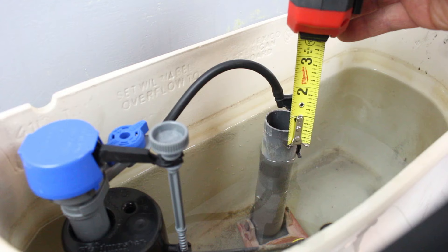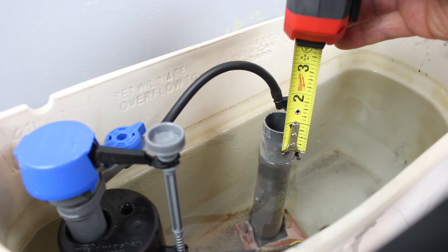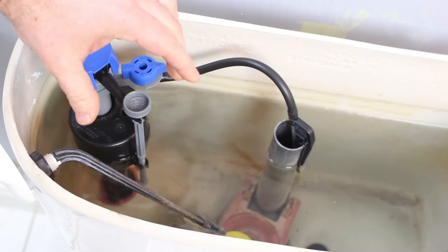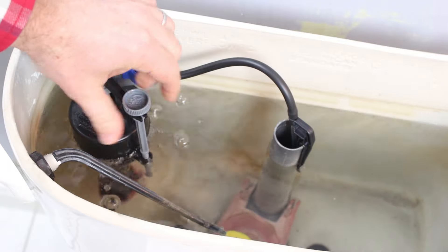So you can make a mark on that, and you can turn the little lever to adjust the height. If you're turning it clockwise, you're going to raise the height in the toilet tank.